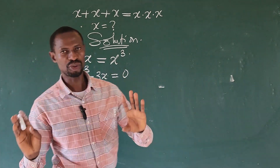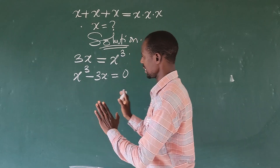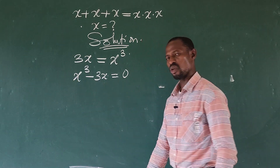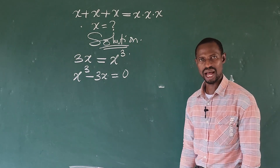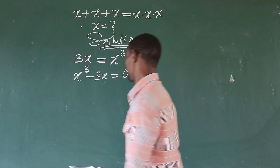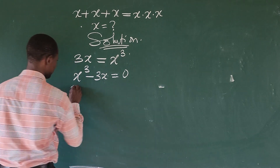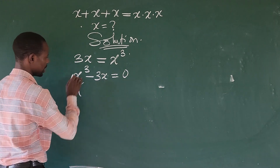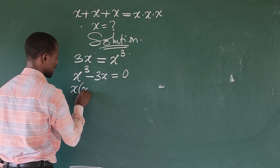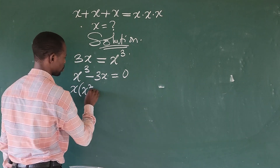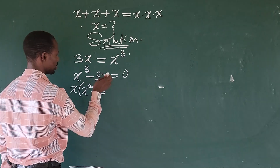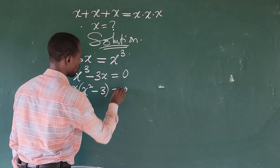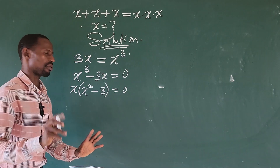So what we do here now is x is here, x is here. So let's factor out x. Factoring out x, we're going to have x multiplied by x to the power of 2 minus 3, and this is equal to 0.